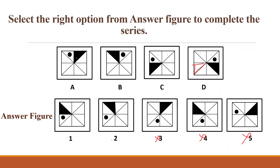Now let's move on to the shaded portion. Students, as you can observe, this shaded portion is moving one, two and three steps in the anticlockwise direction. So this shaded portion is moving one, two, three and four steps in the anticlockwise direction. In figure B it moved one step anticlockwise and came here. From here, two steps: one and two — it came here in option C. From here, three steps anticlockwise: one, two and three — it came here in option D. Now four steps anticlockwise: one, two, three and four. Means the shaded portion should come here and the circle should come here in the answer figure.